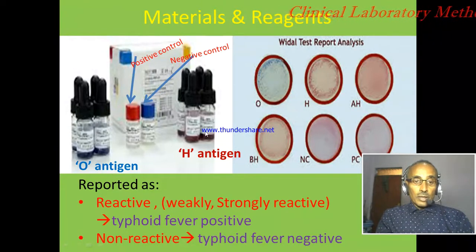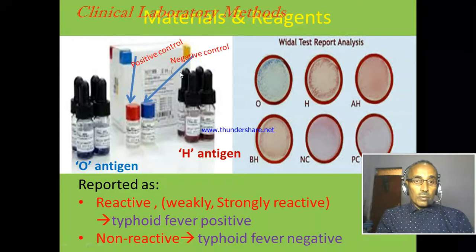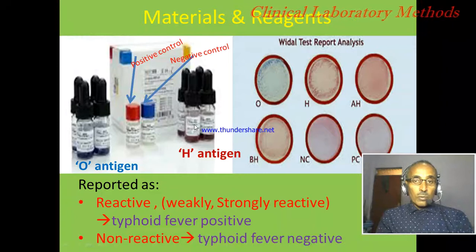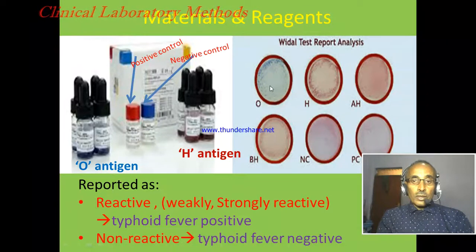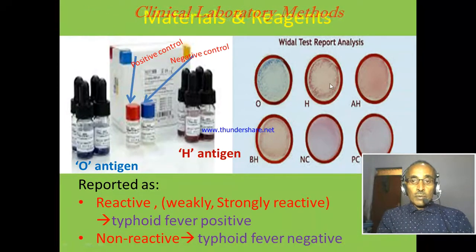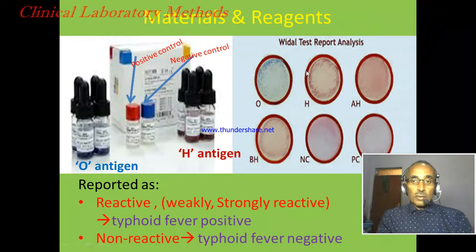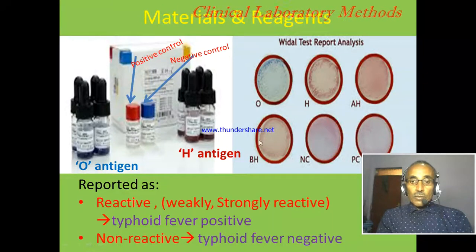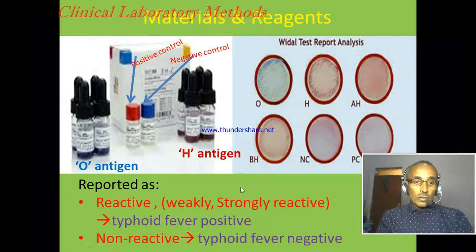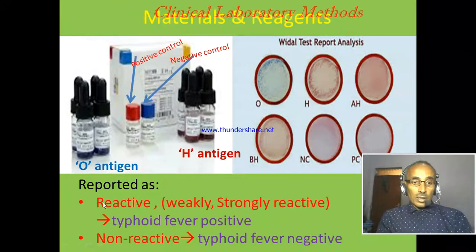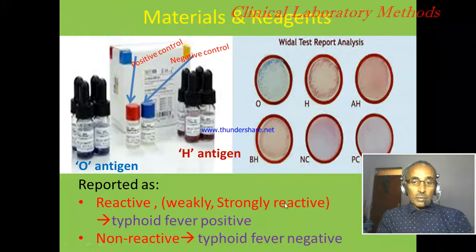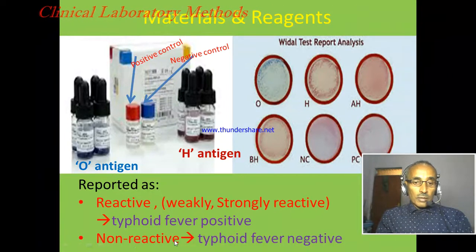Materials and reagents for the WIDAL test include O antigen, H antigen, positive control, and negative control. In the procedure, one drop of serum is added to each ring on a slide, then O antigen and H antigen are added and mixed. After two minutes, the presence or absence of agglutination is read. A reactive result indicates typhoid fever positive; non-reactive indicates typhoid fever negative.